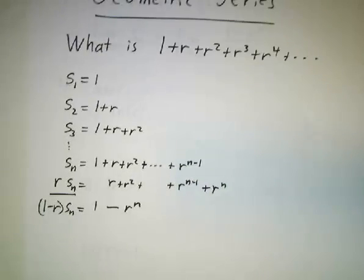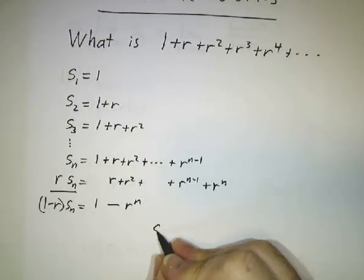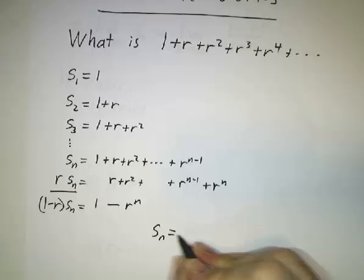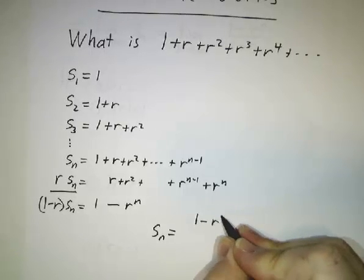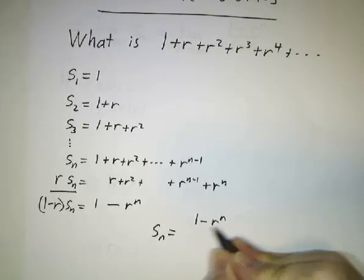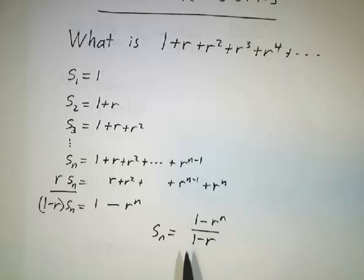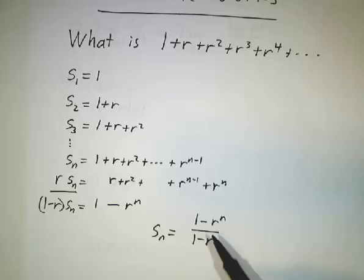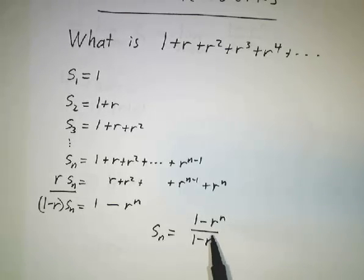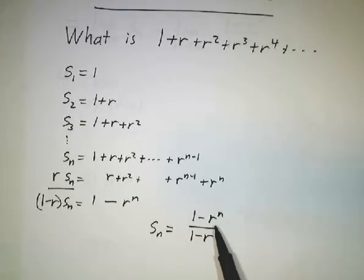We get minus r to the n, and that means S_n equals 1 minus r to the n, divided by 1 minus r. This expression — the sum of a finite geometric series of n terms — is true no matter what r is. It's true if r is 17, it's true if r is 0.03.